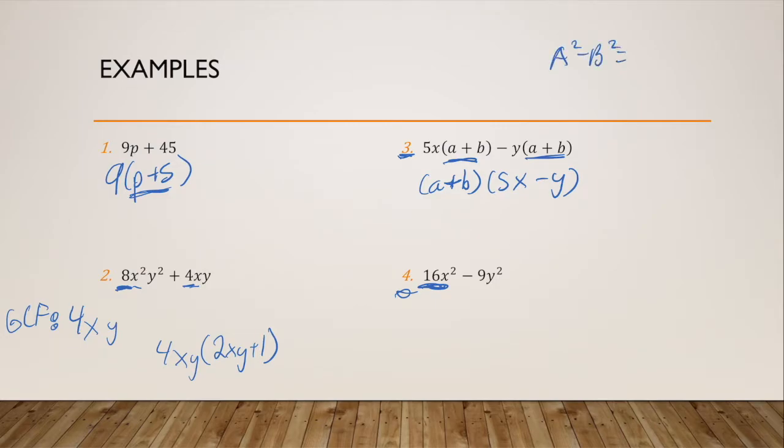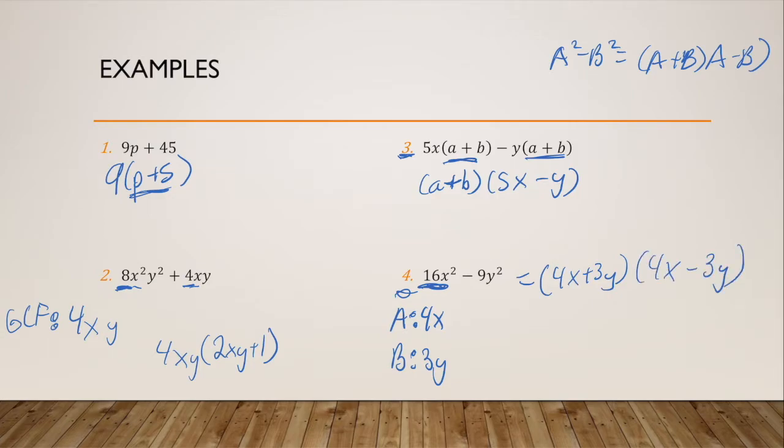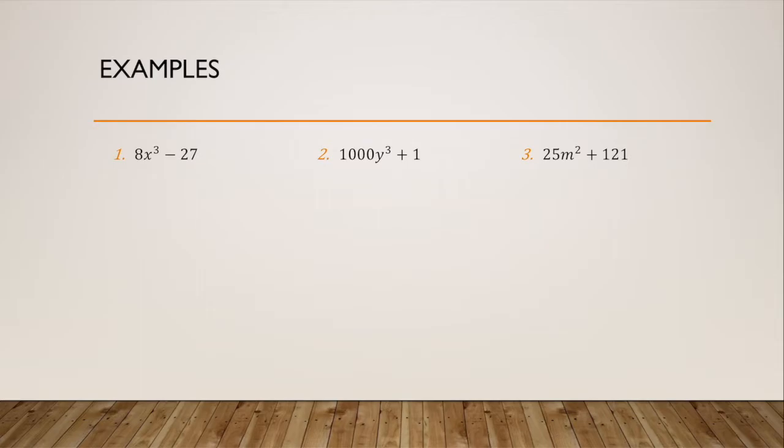If I've got A² minus B², remember that factors to A plus B times A minus B and our middle term will cancel. My A is 4X, my B is 3Y. So I'm going to factor 4X plus 3Y times 4X minus 3Y. I also could have factored this by putting in a zero placeholder and finding the factors of AC that added up to B.